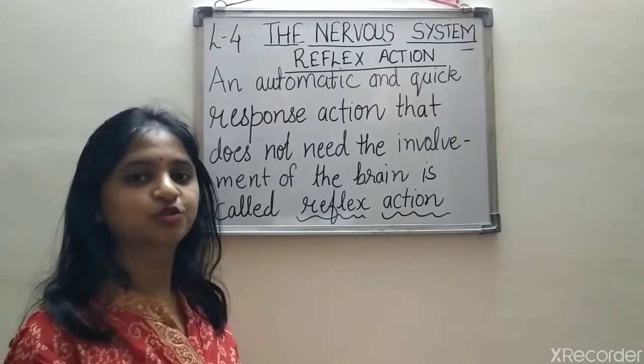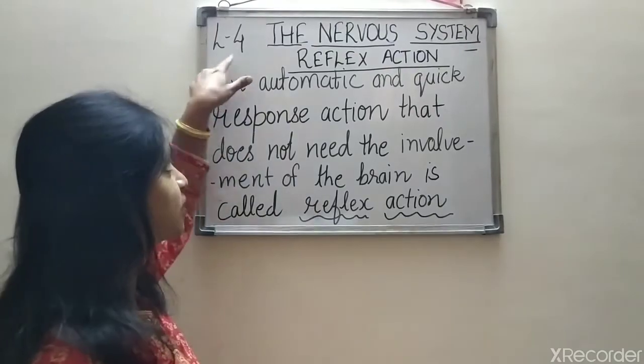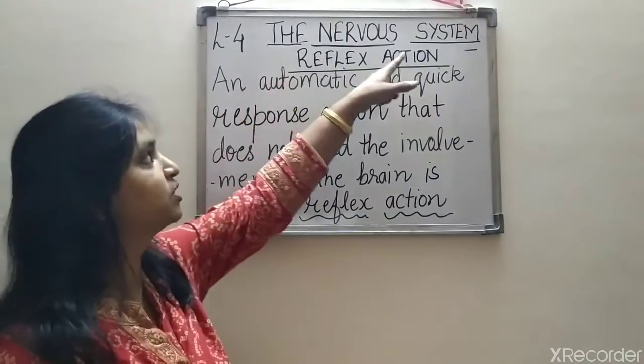So it happens with you. Do you know what we call them — how we are taking an immediate decision? These are due to reflex action. So students, we are doing lesson number 4: The Nervous System.